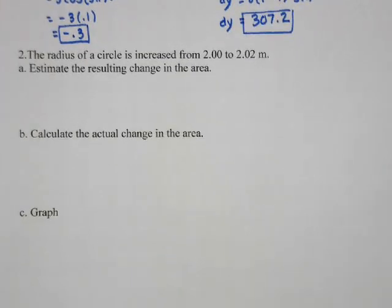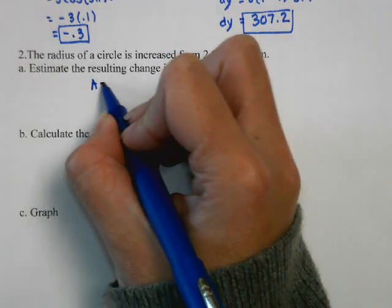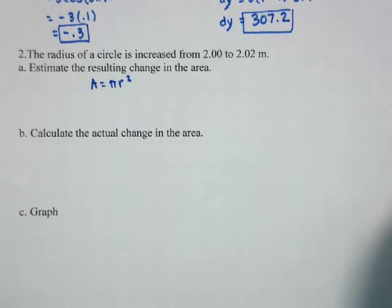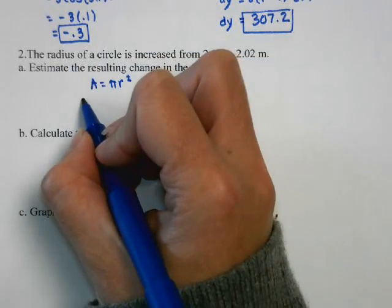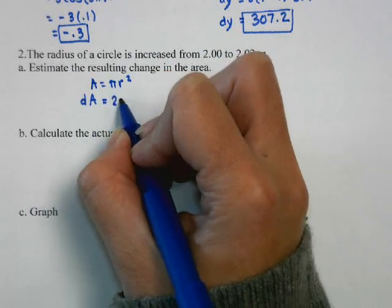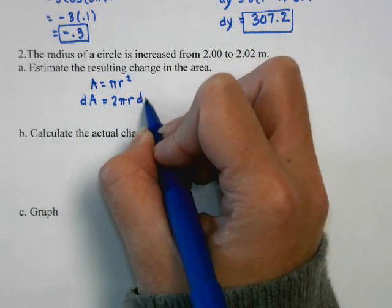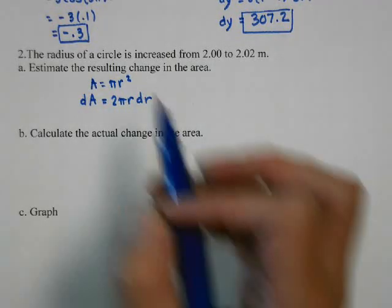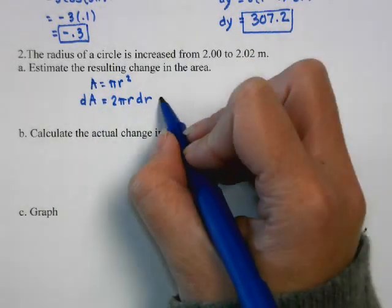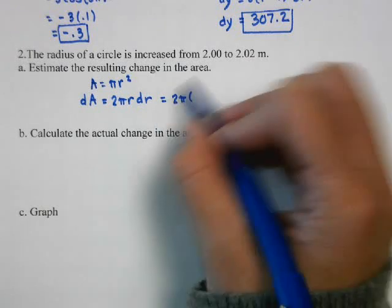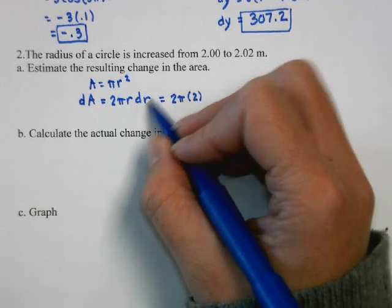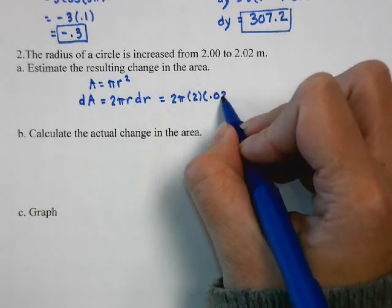Let's look at a physical example. The radius of a circle is increased from 2 to 2.02. We're going to estimate the change in area, then compare that to the actual change in area. Area of a circle is pi r squared, so the differential is dA equals 2 pi r dr. For this situation, we have 2 pi, with radius 2 and change in radius 0.02.